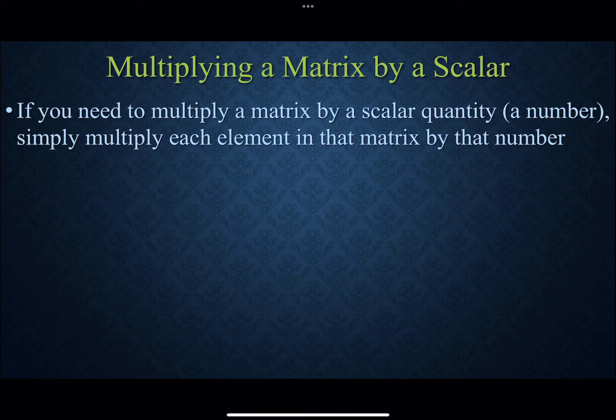Now, multiplying a matrix by a scalar—so this is now you're multiplying a number on the outside of the matrix to each number on the inside. You're pretty much thinking of this as a big distributive property. Whatever number is on the outside distributes to each element of the matrix on the inside.